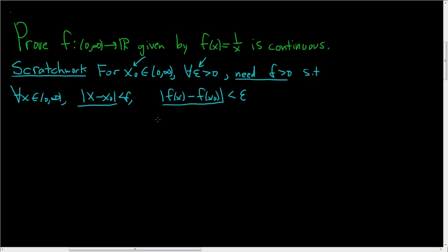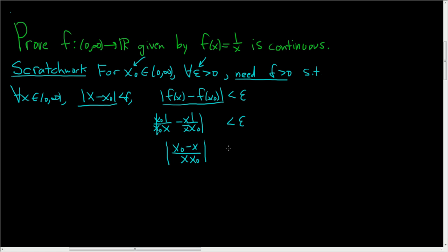So let's go ahead and rewrite this. f of x here is 1 over x, and f of x naught is 1 over x naught. We can actually perform the subtraction here: x naught minus x over x·x naught. You can simply multiply by x naught over x naught, then multiply by x over x, and subtract. We want this to be less than epsilon.